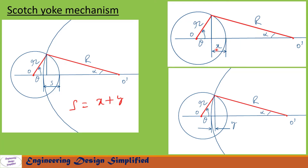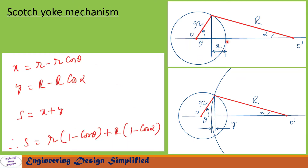When the crank rotates by angle theta, the roller center moves from its original position, and we call this displacement x. Similarly, the roller guide moves from its original position by x, and from there by an additional distance y. So the displacement of the plunger s can be written as x plus y. From the diagram, x equals r minus r·cos(theta), and y equals R minus R·cos(alpha). Therefore, s = r(1 − cos θ) + R(1 − cos α).